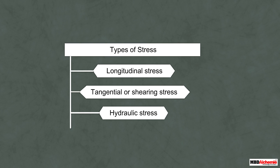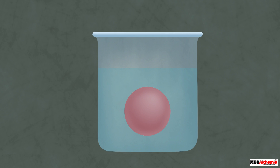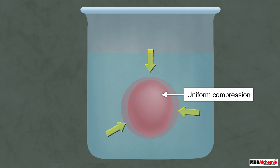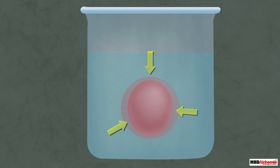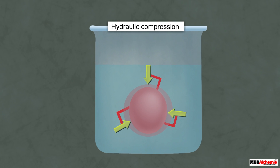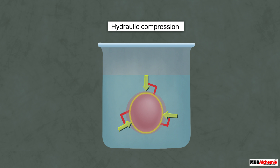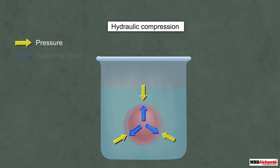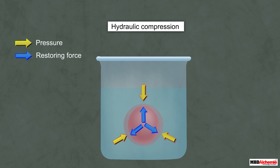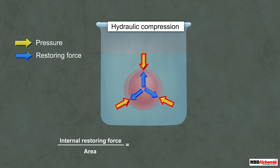Now let us understand hydraulic stress. Take a solid sphere and place it in a fluid under high pressure. The fluid compresses the ball uniformly in all directions; the force acts perpendicular at each point of the surface, and the ball is said to be under hydraulic compression. This compression leads to a change in the volume of the ball. Internal restoring forces develop in the sphere equal and opposite to the force applied by the fluid. This internal restoring force per unit area is called hydraulic stress, and its magnitude equals the applied force per unit area.